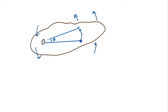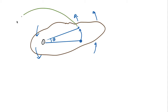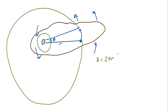What distance has a point at radius r traveled? If theta were a full circle, the distance would be the circumference, 2 pi r. But if it's only a fraction of a circle — a wedge of theta — then the fraction of the full circle is theta over 2 pi radians. So the distance traveled is 2 pi r times theta over 2 pi, which simplifies to just r theta in radians.